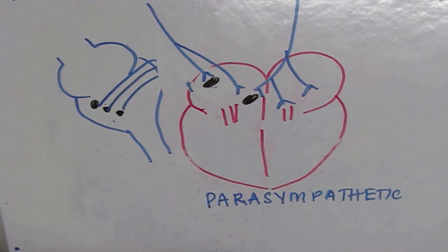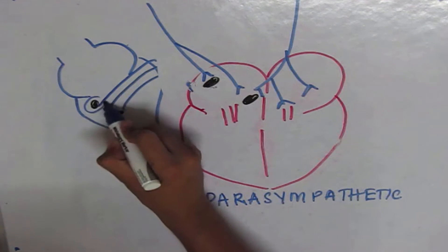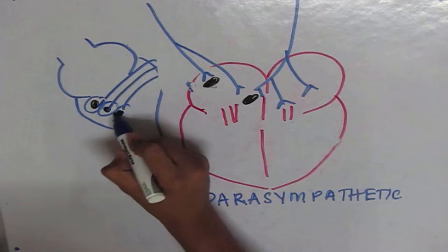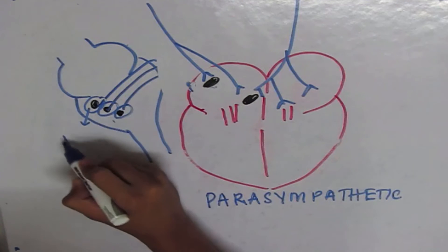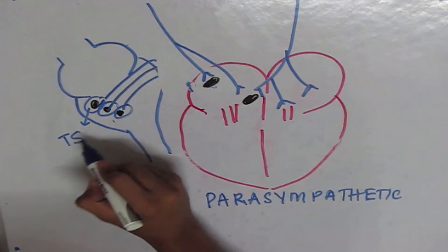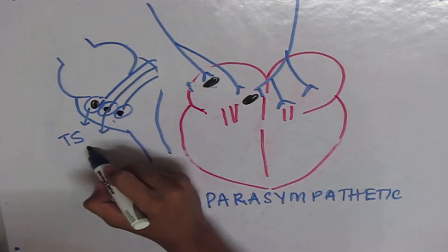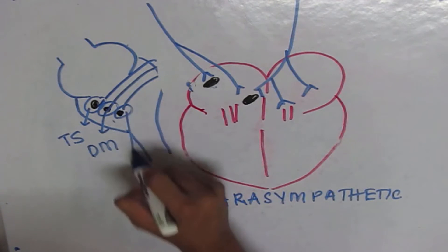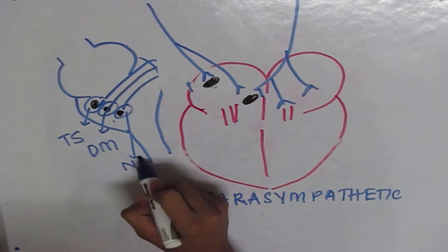Let us first discuss about the parasympathetic innervation of the heart. Parasympathetic innervation of the heart arises from three nucleus in the medulla oblongata. The three nucleus are tractus solitarius, dorsal motor nucleus of vagus, and nucleus ambigus.